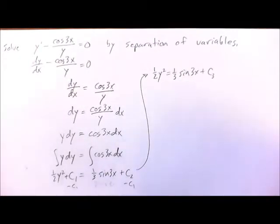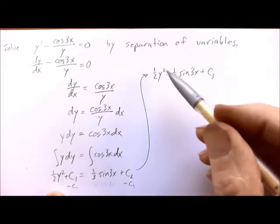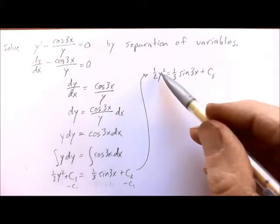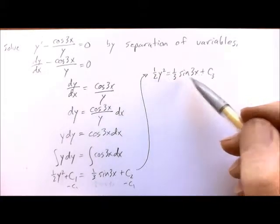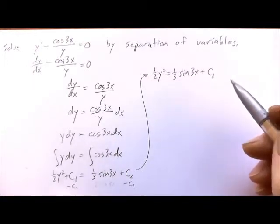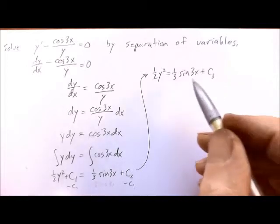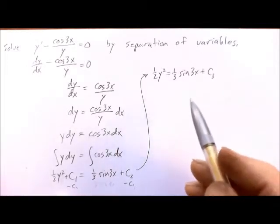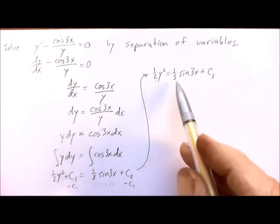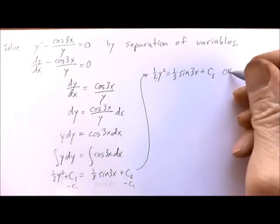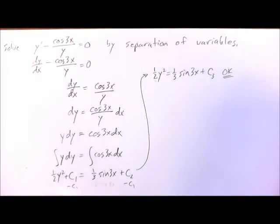Now at this point we could be done. Sometimes we'll want to solve for y but in this case let's not. If we try to solve for y we have to square root both sides, which involves a plus or minus. So in this case let's leave it like that, except that what we may want to do is we could get rid of these fractions if you wanted to. So let's just make note that this is okay. We could call it done right there.